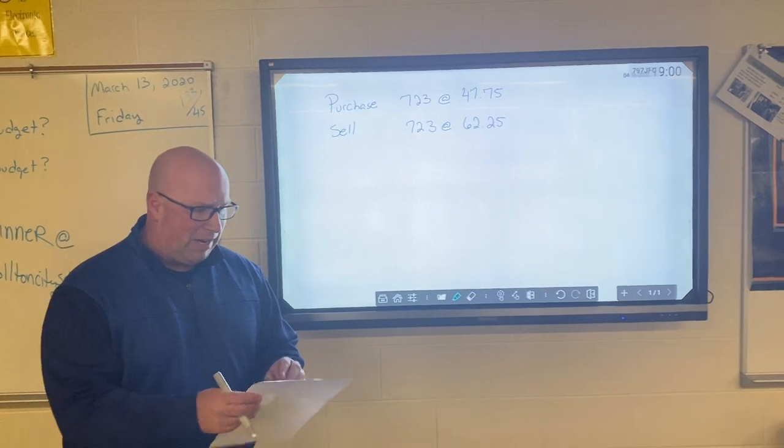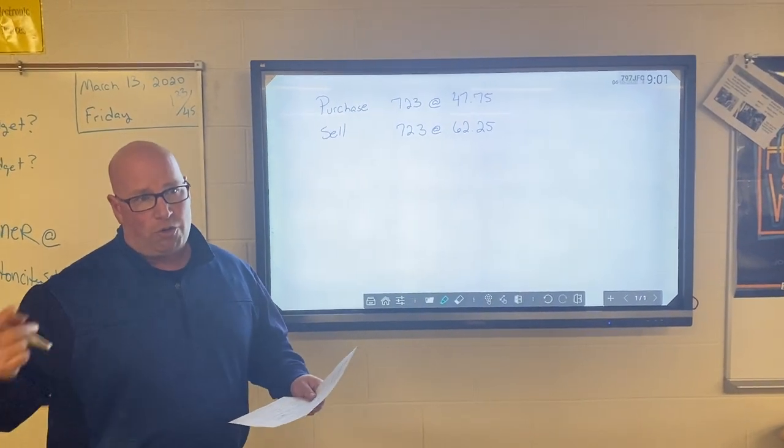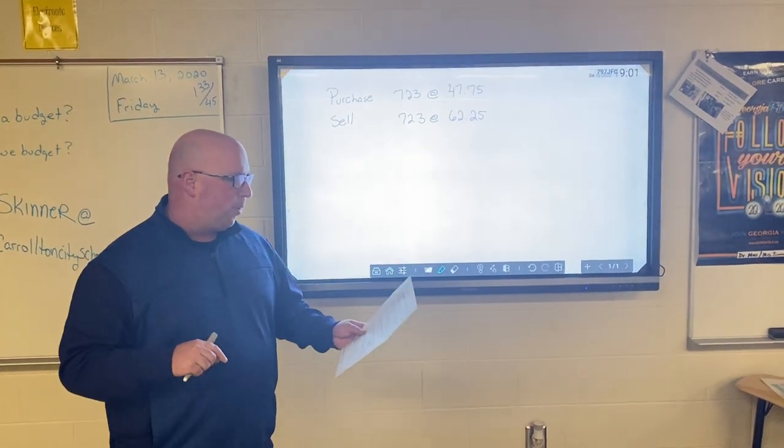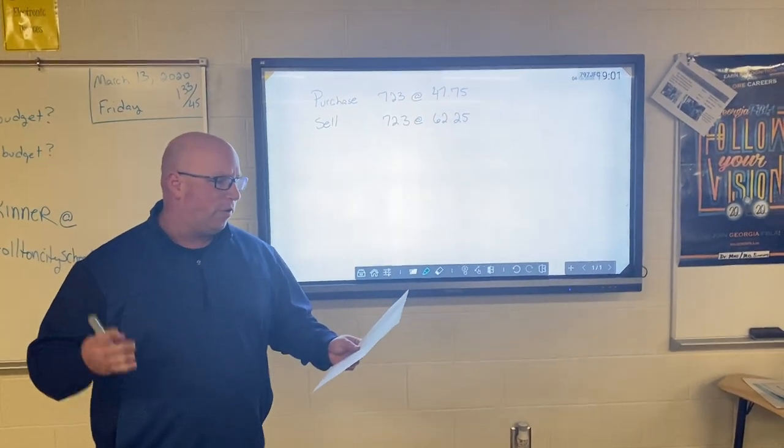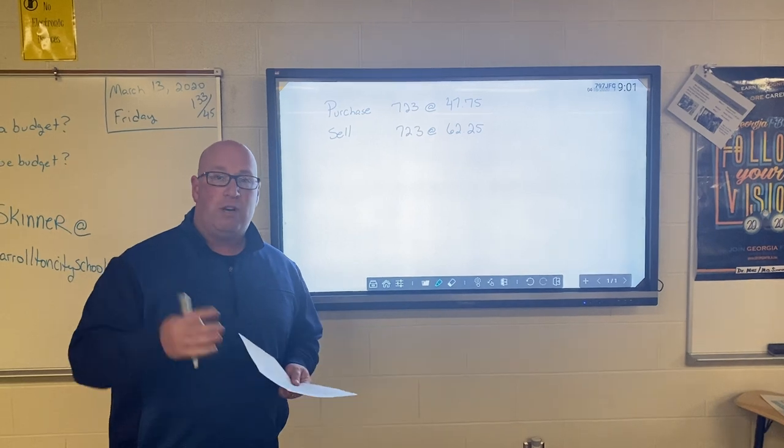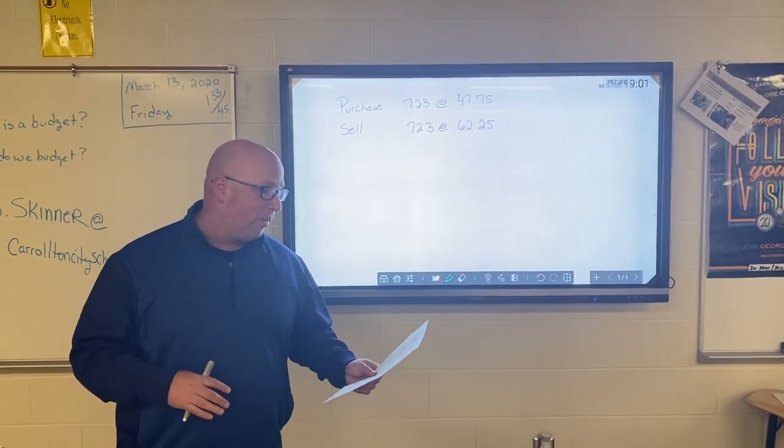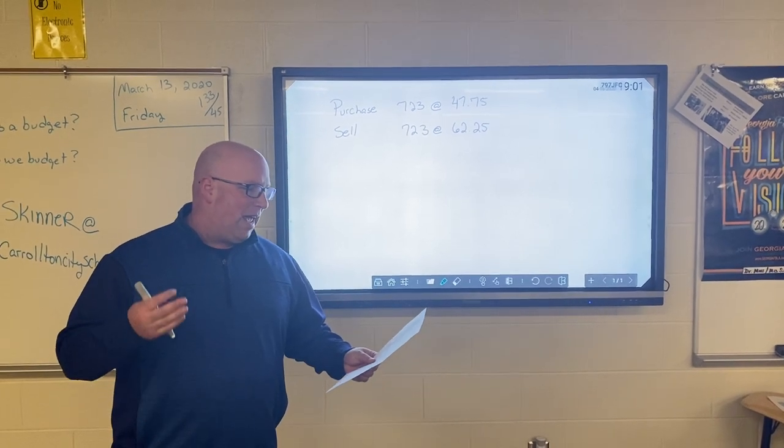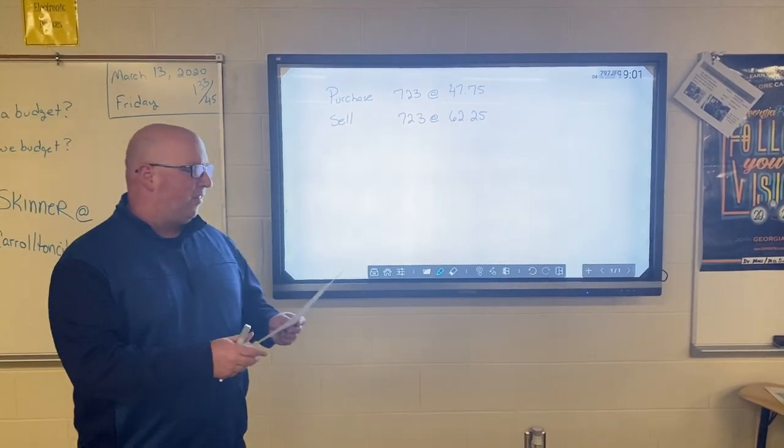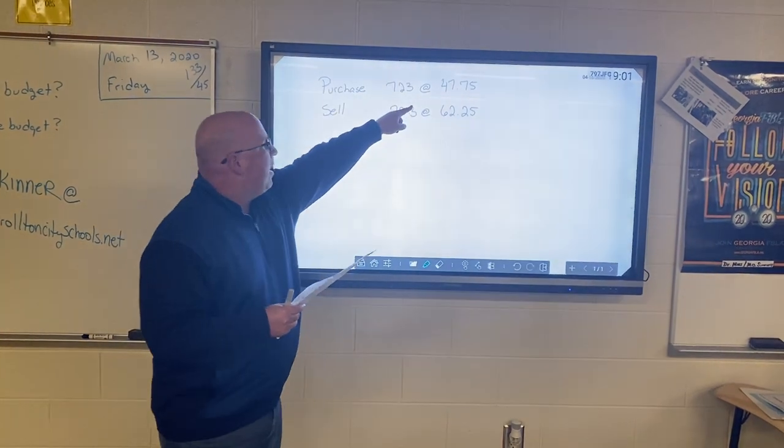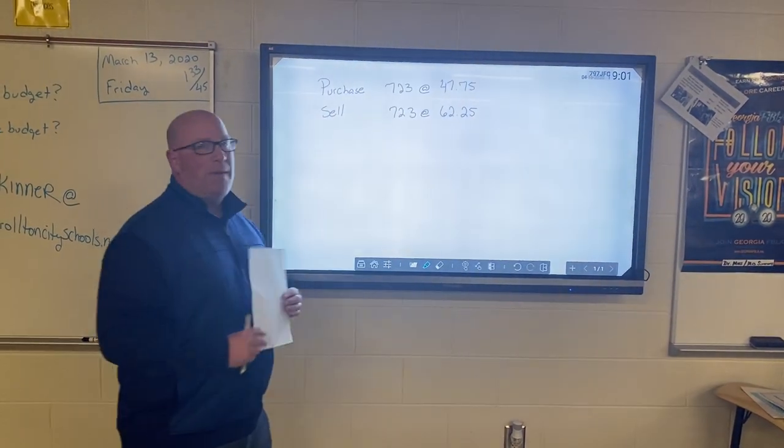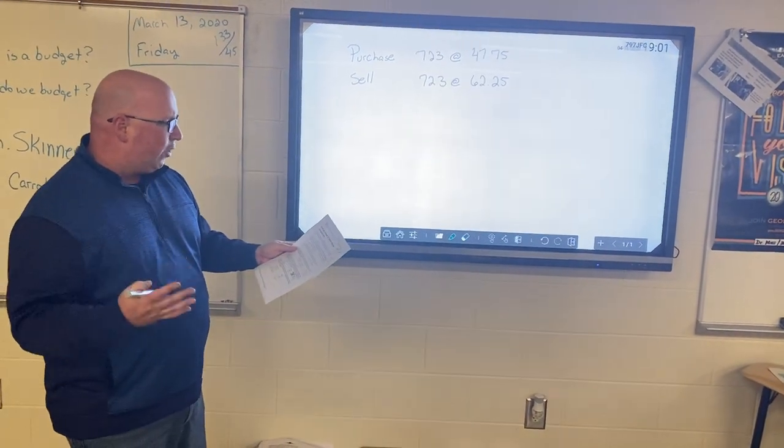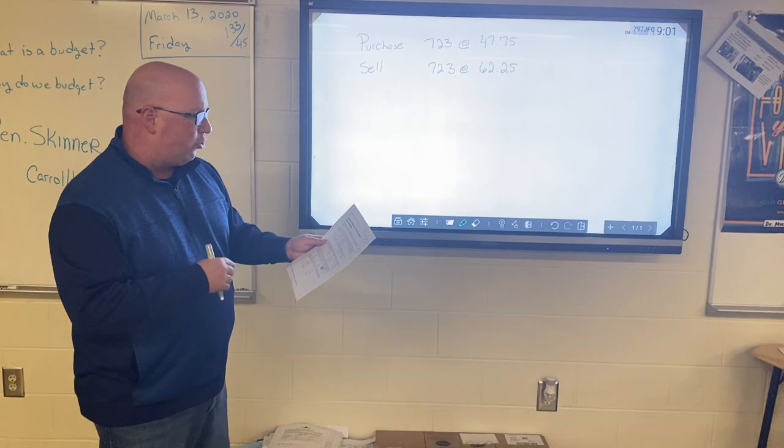You can see on the worksheet, if you had it pulled up, I've put the first problem or started the first problem up here. Basically, in number one it says we're purchasing 723 shares of stock. You should know what a share of stock is by now if you've done the assignments leading up to this. But you bought 723 shares of stock in Nike and you paid $47.75 for that stock.